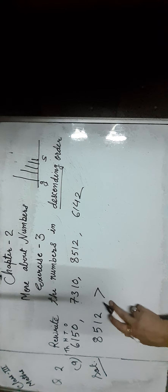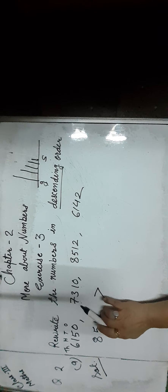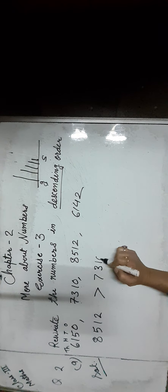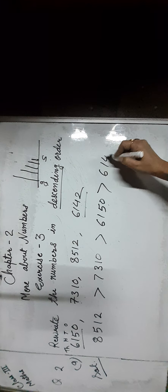Note that the greater-than sign always opens toward the greater number. Now compare the remaining numbers: the 1000s place digits are 6, 7, and 6. Since 7 is greater than 6, we move with 7,310. Now compare the remaining digits — the 1000s and 100s place digits are same in both numbers, so we compare the 10s place: that is 5 and here is 4. Since 5 is greater than 4, we write 6,150, and then 6,142.